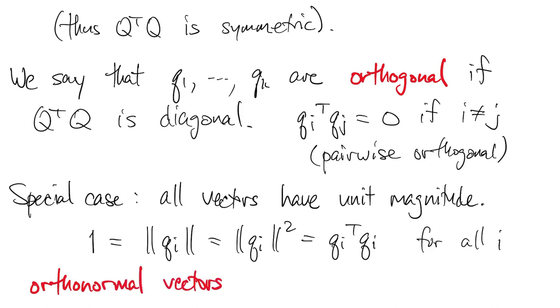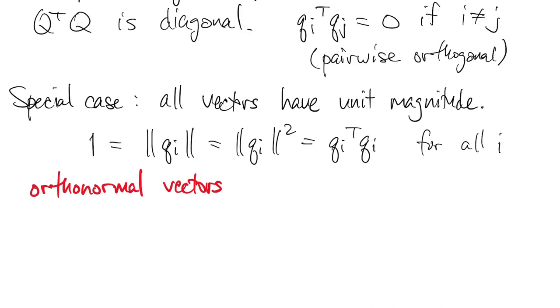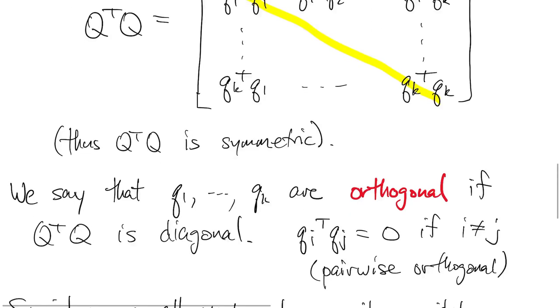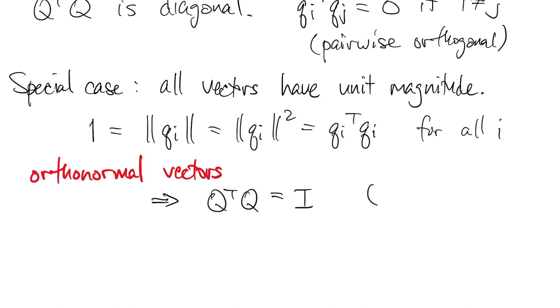Then we would call these vectors orthonormal vectors. So what does this say about this Q transpose Q? Well, those are the things sitting on the diagonal. So they must all equal one, which means that Q transpose Q is actually an identity matrix.